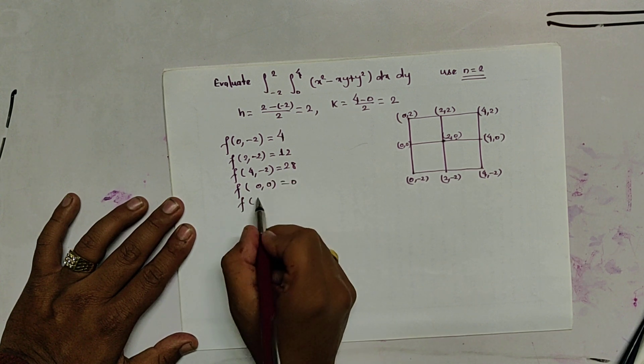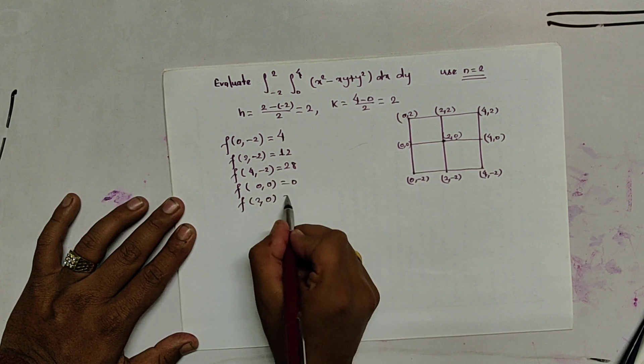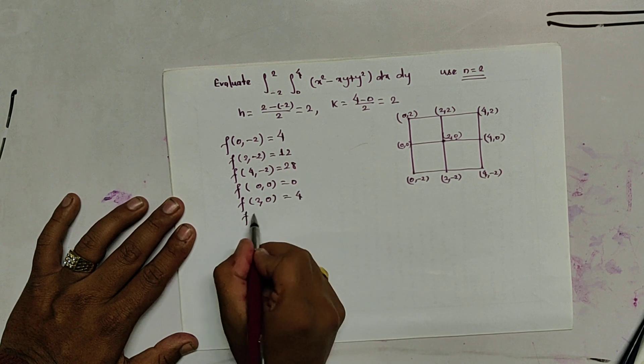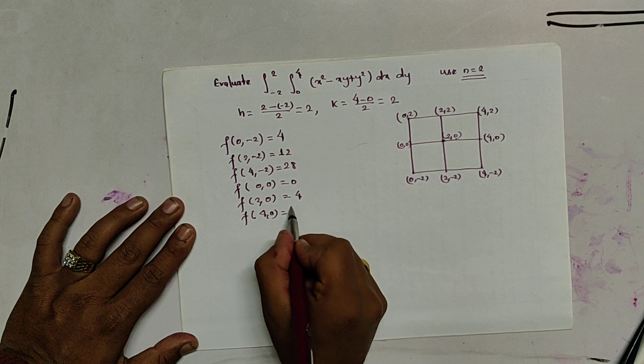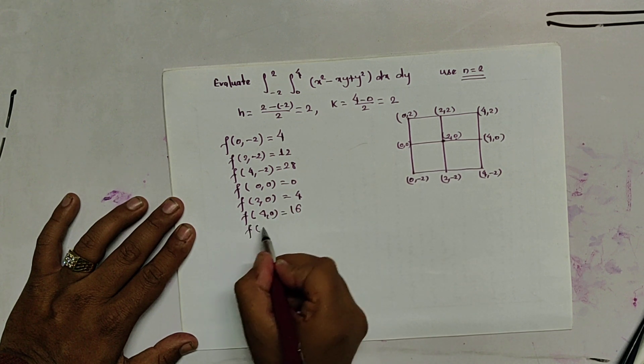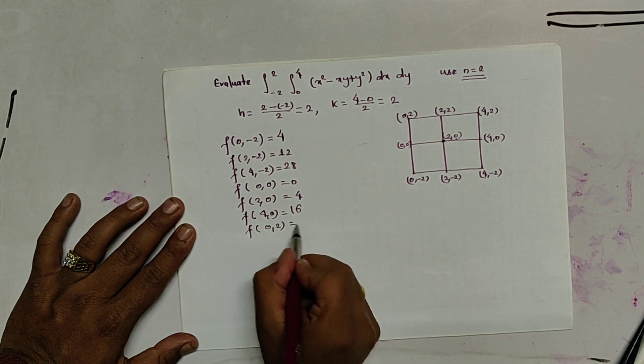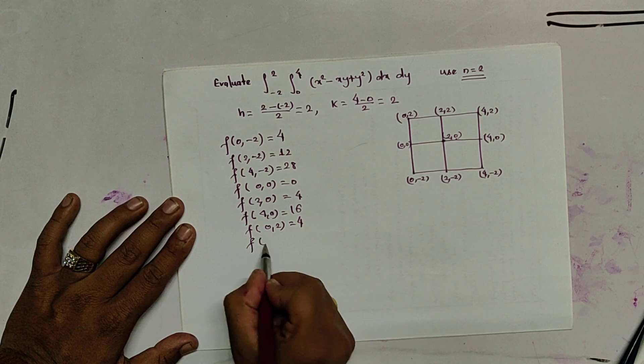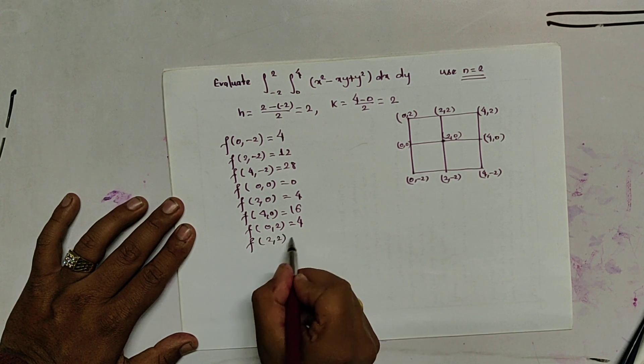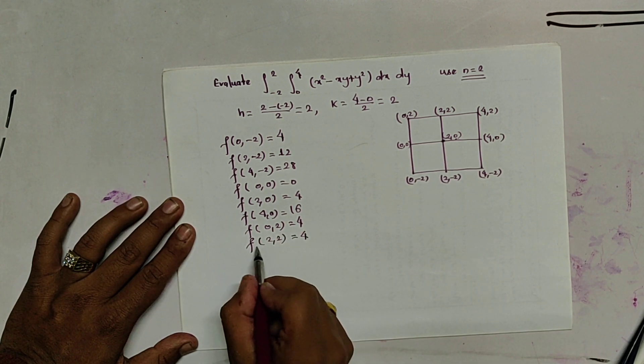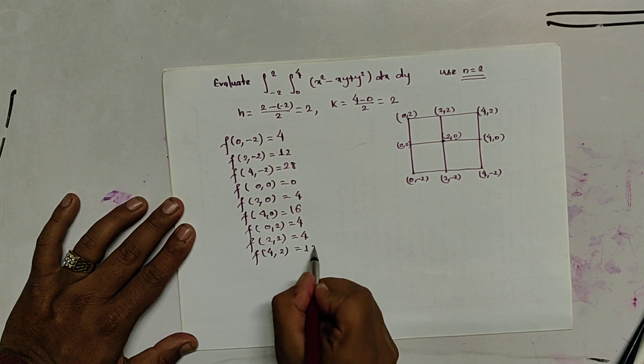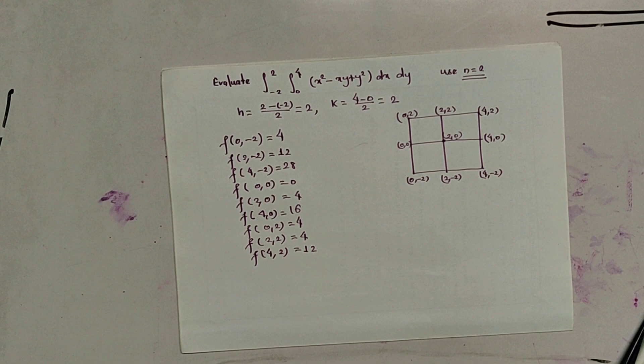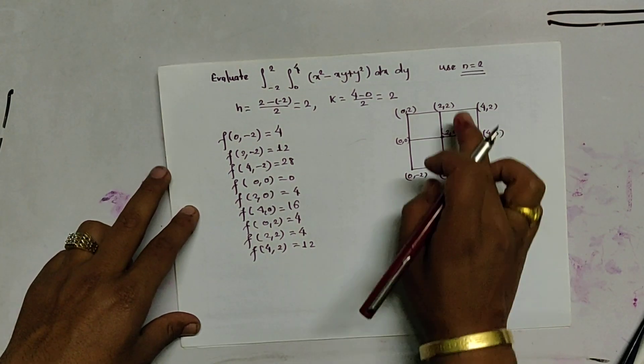F 0 0 it gives 0. F 2 0 it gives 4. F 4 0 it gives 16. F 0 2 it gives 4. F 2 2 it gives 4. F 4 2 it gives 12. These are the values in these points.